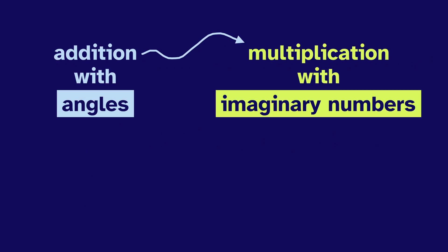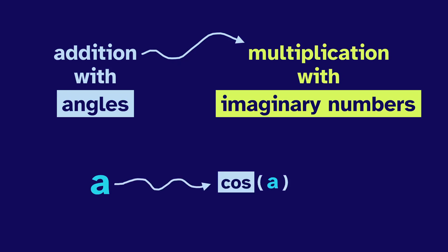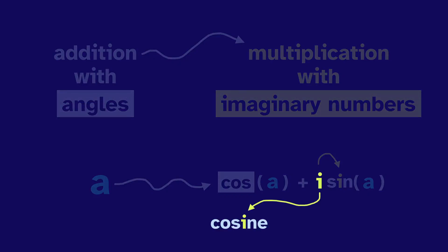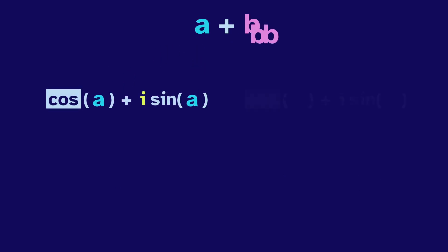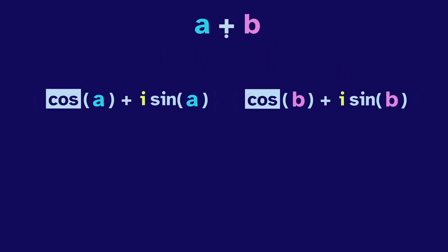Addition with angles corresponds to multiplication with imaginary numbers. We convert the angle A into the number cosine of A plus i times sine of A. You can remember that i goes with the sine because there's an i in sine — well, there's no i in the shortened version, COS. Anyway, if we want to add the angles A and B, we convert each of them into their complex number and convert the addition into multiplication.